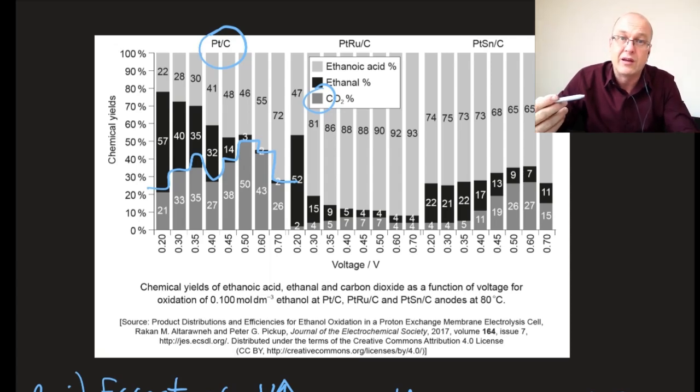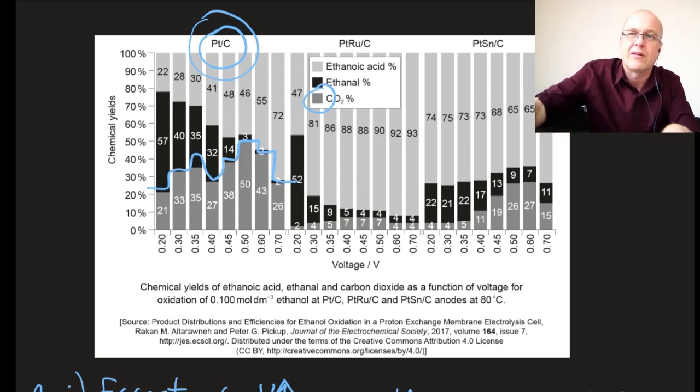You could just say it makes the most carbon dioxide, which is a little circular, but there we go. Perhaps a better answer is that at every voltage the platinum carbon catalyst makes more carbon dioxide than any of the other catalysts. That's it, that's two. Done. That was quite an easy section for paper three, I think.